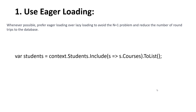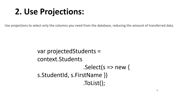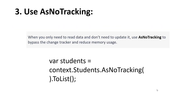The second tip is to use projections. Use projections to select only the columns you need from the database, reducing the amount of transferred data. Only retrieve the specific columns you want. For example, use context.Students.Select() to project to a new object with just StudentID and FirstName, then call ToList().